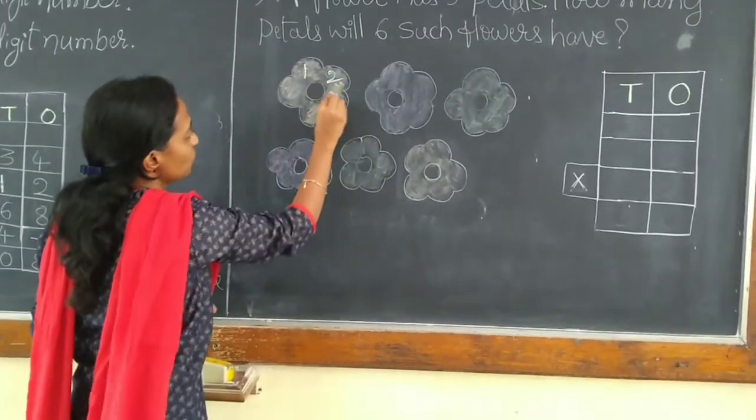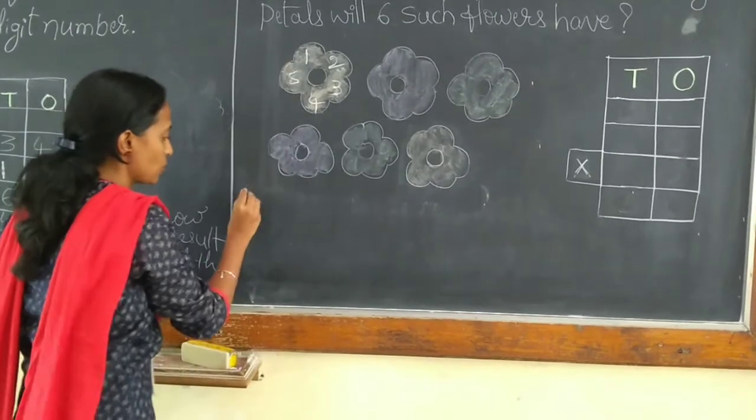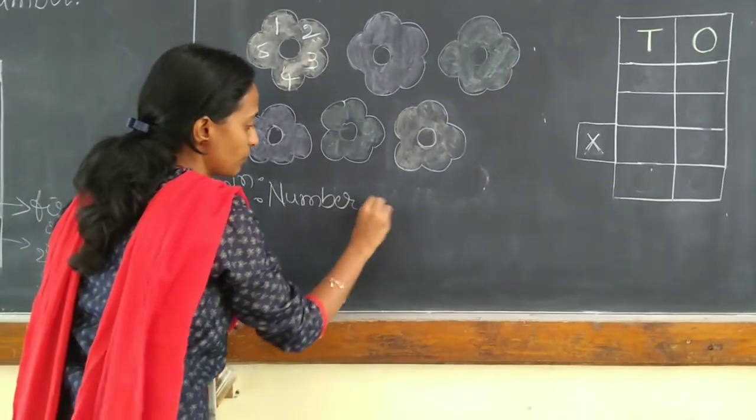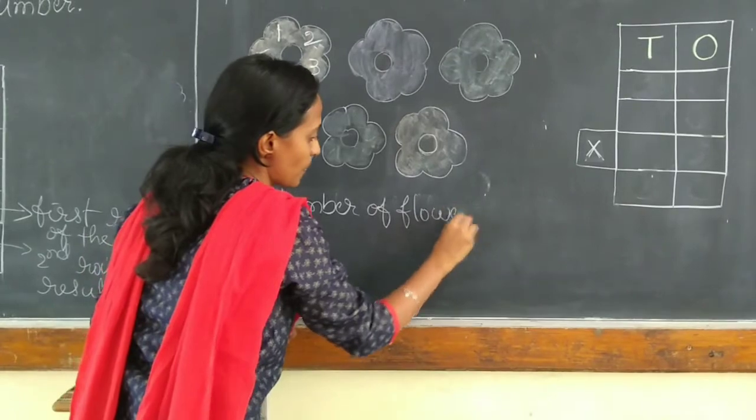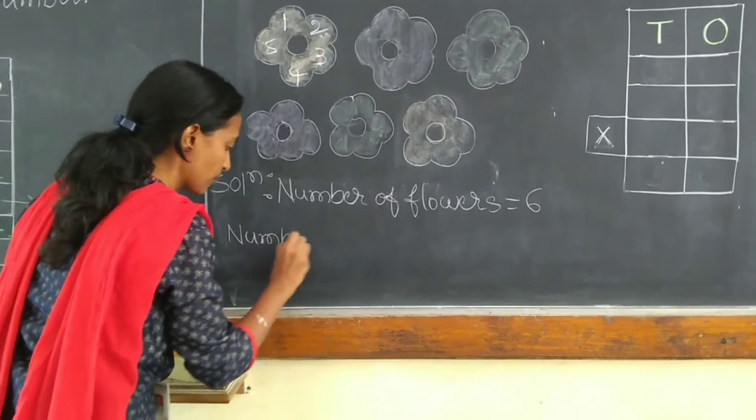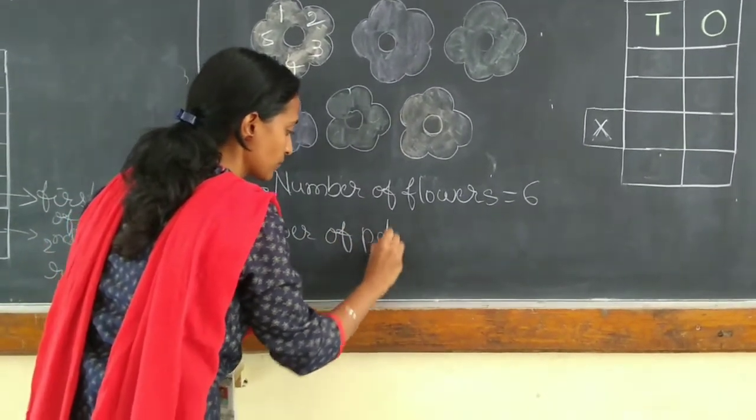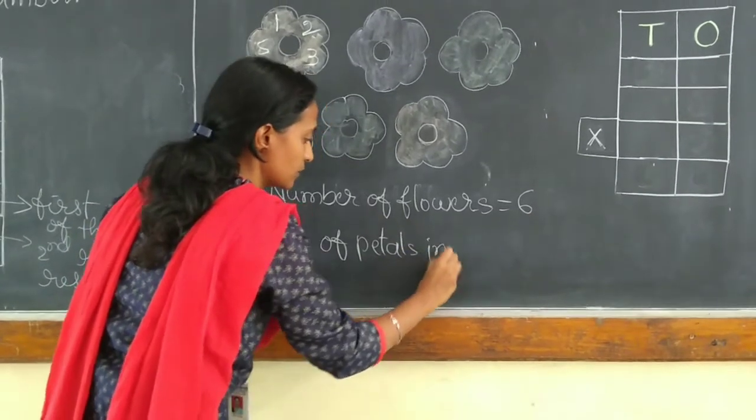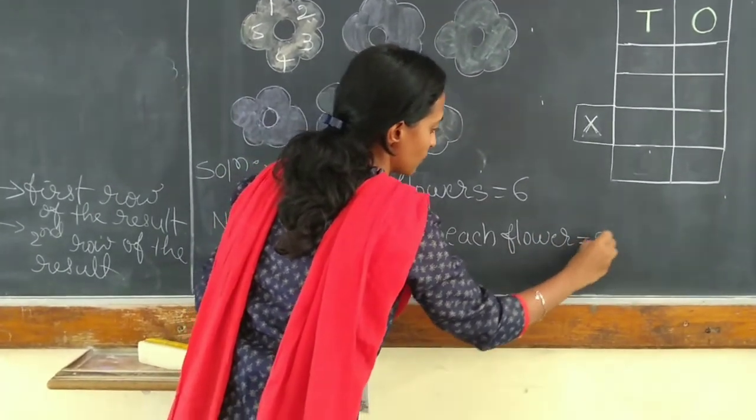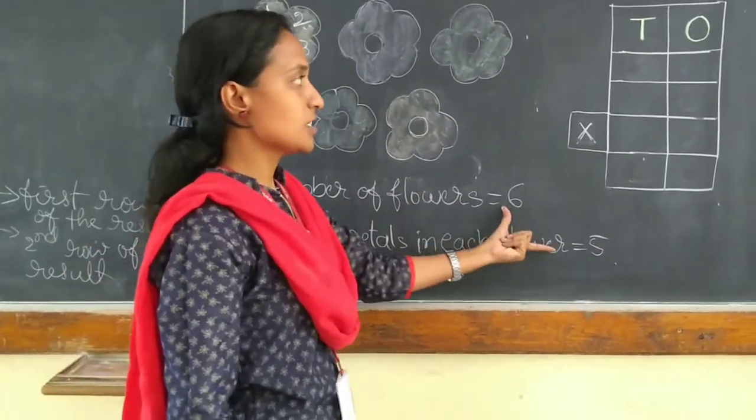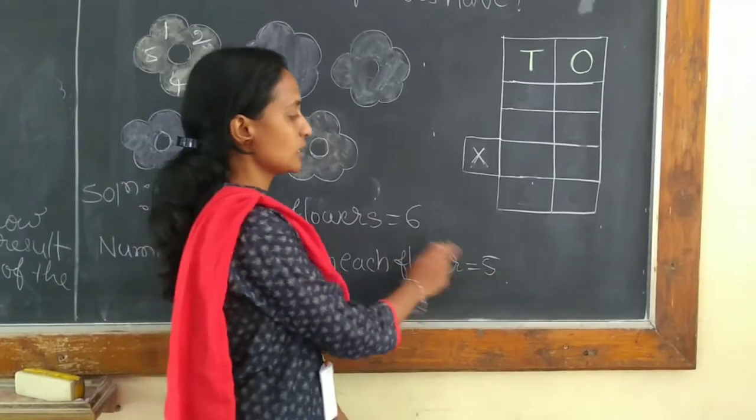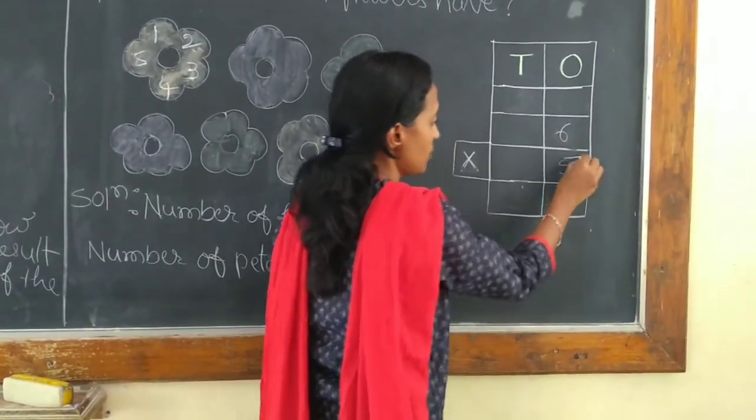And each flower has 5 petals. 1, 2, 3, 4, 5. So, how to write the solution with the given data. Number of flowers is equal to 6. And number of petals in each flower is equal to 5. So, we have to place the given digits in the respective place values. They have given here 1-digit numbers. So we need to place the digits in the 1's place. 6 multiplied by 5.